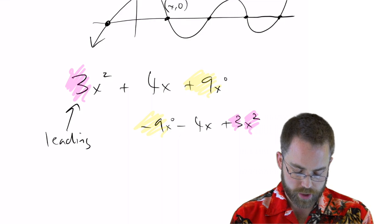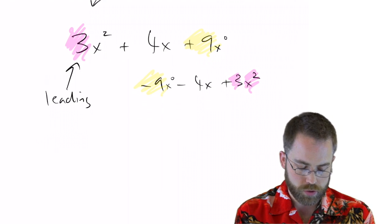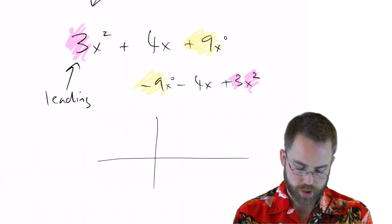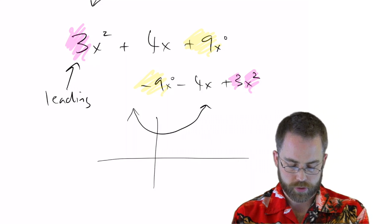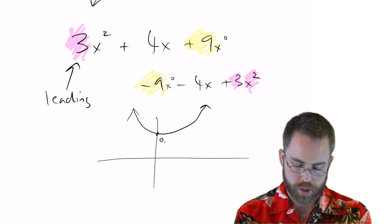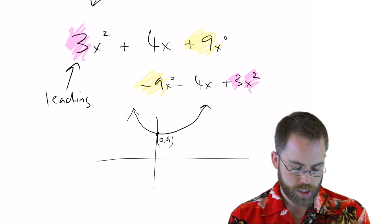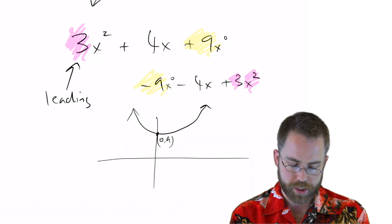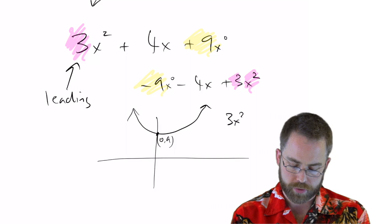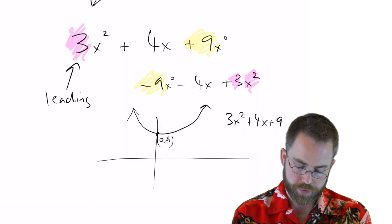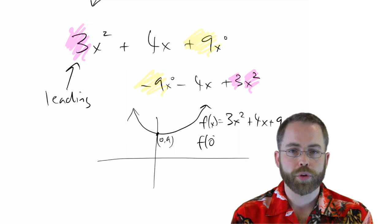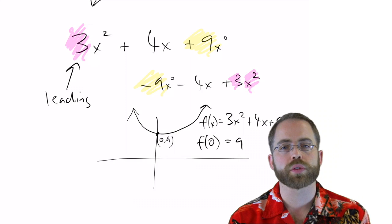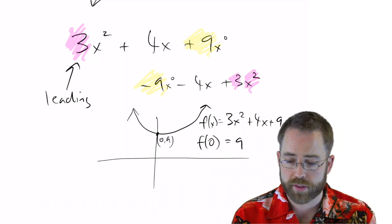The constant term will tell you the y-intercept. Here, I know, without knowing anything else about this function 3x squared plus 4x plus 9, that it's going to look something like this, that there's going to be somewhere up here at 0, 9, that's going to be my y-intercept, and presumably there are no x-intercepts. But this one, I can tell because when I have 3x squared plus 4x plus 9, if I plug in 0, well, 3 times 0 squared plus 4 times 0 plus 9 is definitely just going to equal 9. So finding the y-intercept is a nice snap.